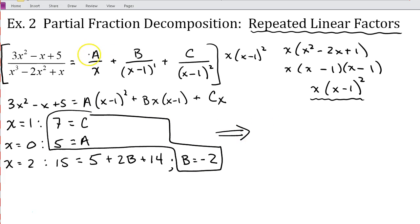So now that I have these three values, I can go ahead and plug them in for A, B, and C. So for my decomposition, I would get 5 over x minus 2 over x minus 1 plus 7 over x minus 1 squared as our final answer.